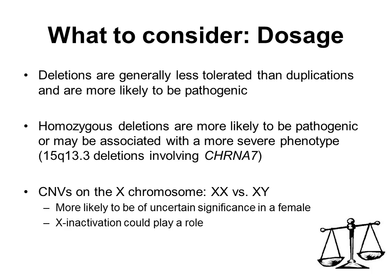Dosage refers to the actual copy number in a patient — zero versus one versus two versus three copies. Deletions are generally less tolerated than duplications and are therefore more likely to have a clinical impact. Similarly, homozygous deletions may cause more severe phenotypes than a single copy loss, and the deletion of the CHRNA7 gene at 15q13.3 is an example of this. Also, a single deletion of an autosomal recessive gene by itself would not be expected to cause disease, whereas a homozygous deletion would. When considering dosage, it is important to be careful of CNVs on the X chromosome and consider the patient's sex, since a CNV on the X chromosome may be interpreted as of uncertain significance in a female, whereas in a male there may be evidence of pathogenicity. And X inactivation certainly can be playing a role.